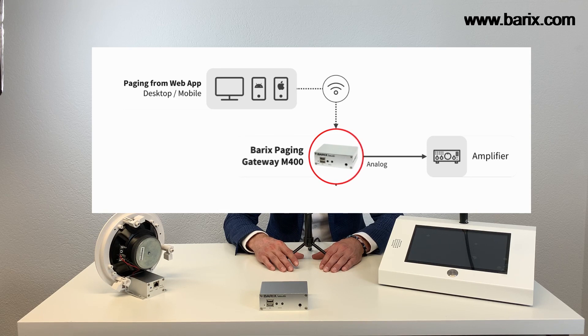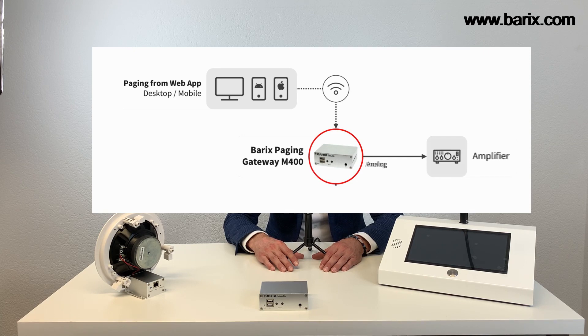Here you can see the Barix paging gateway M400 device, which provides the web server for the web app and serves as a gateway towards the IC paging solution. At the output of the paging gateway, the audio is available as a line level analog signal to feed any existing paging and public address amplifier. Easy, isn't it?